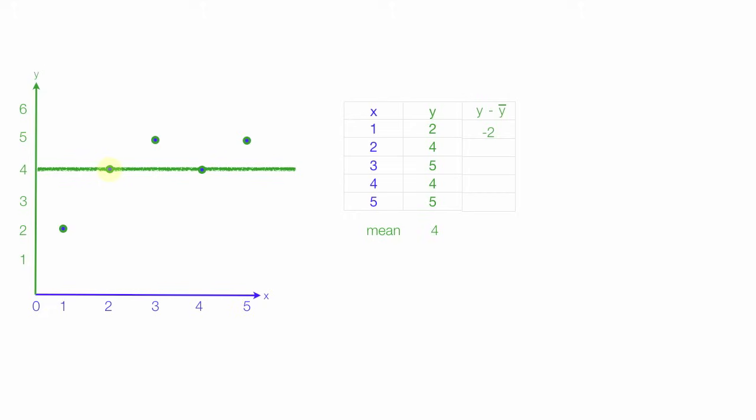Now the next point is right on the mean. So it's 4 minus 4, which is 0. Then I have 5 minus 4, which is 1. Then I have 4 minus 4, which is 0. And 5 minus 4, which is 1.